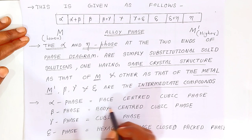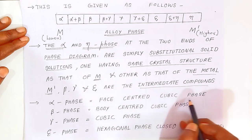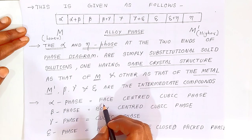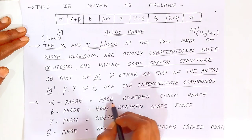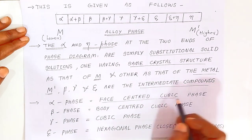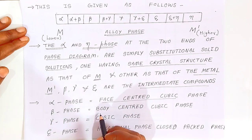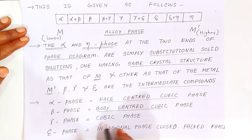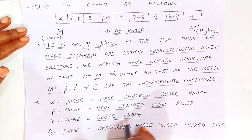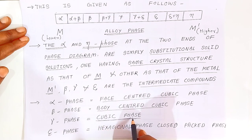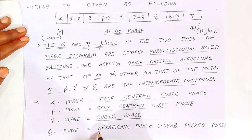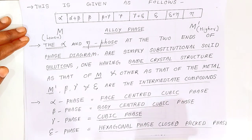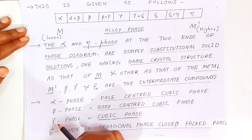What is the alpha phase? It will have a face-centered cubic (FCC) structure. Beta phase is nothing but body-centered cubic (BCC) phase. Gamma phase is cubic phase. Epsilon phase is hexagonal closed-packed phase. So this is the meaning of alpha, beta, gamma, and epsilon phases.